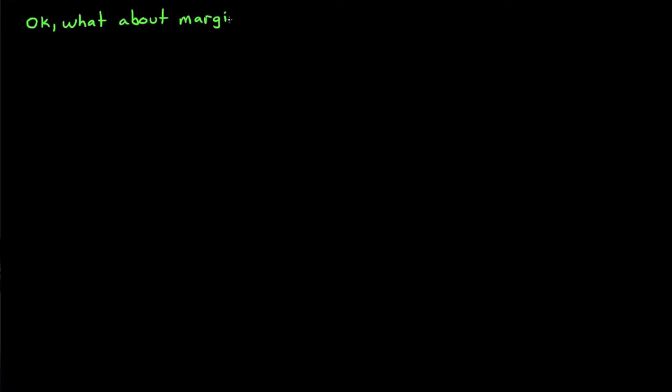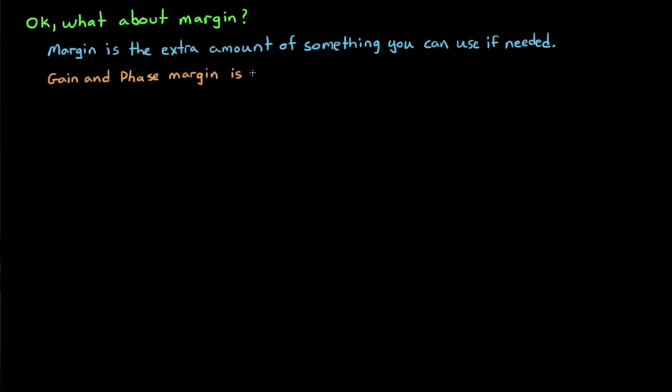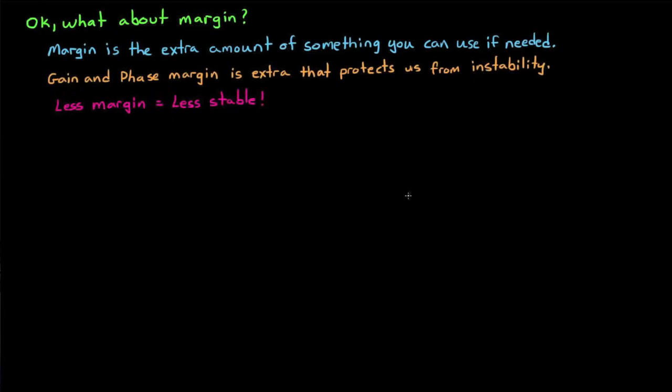Okay, now let's talk about margin. Margin is the extra amount of something that you can use in case you need it. For example, when we're talking gain and phase margin, we're referring to the extra gain, or phase in the system, that we can use before the system starts to oscillate and go unstable. This is sort of like our safety net in the design, and can also answer the question of how stable is stable. Designs that have less margin can be considered less stable in a sense, because smaller variations in the system could cause instability.